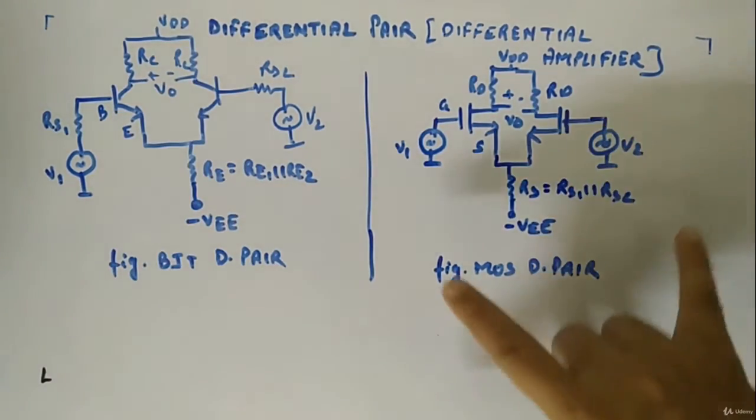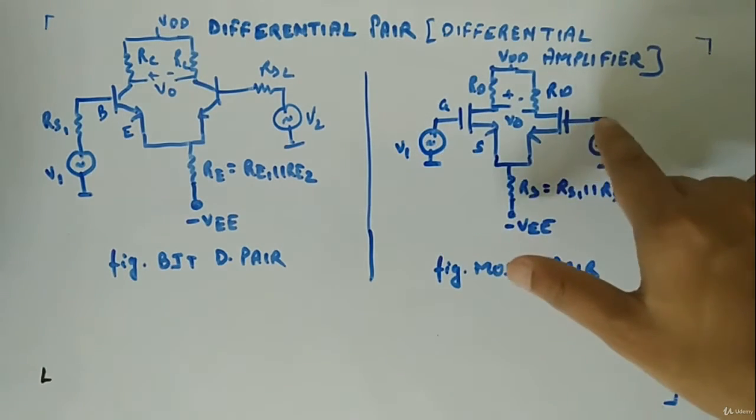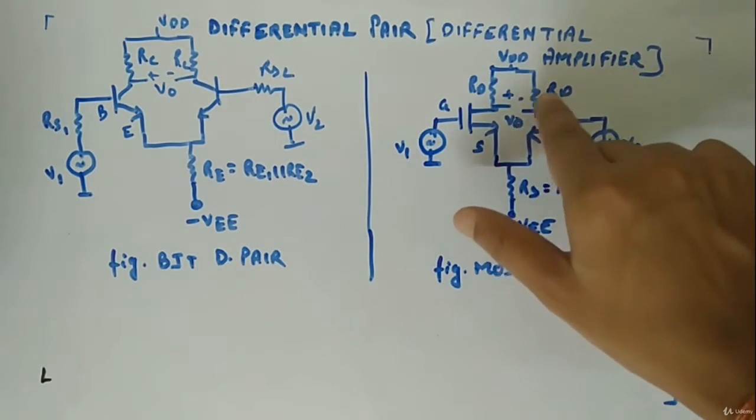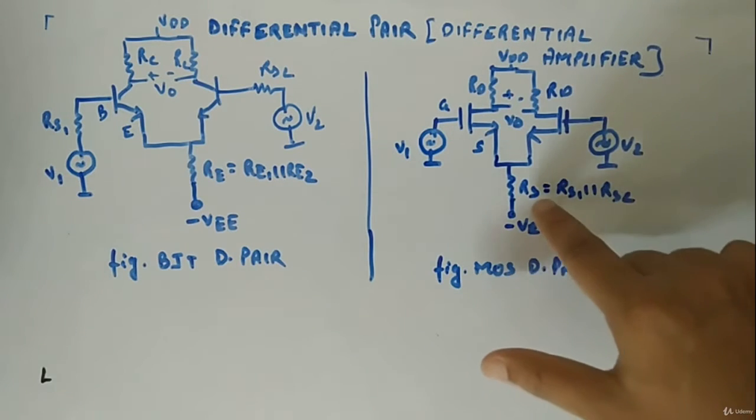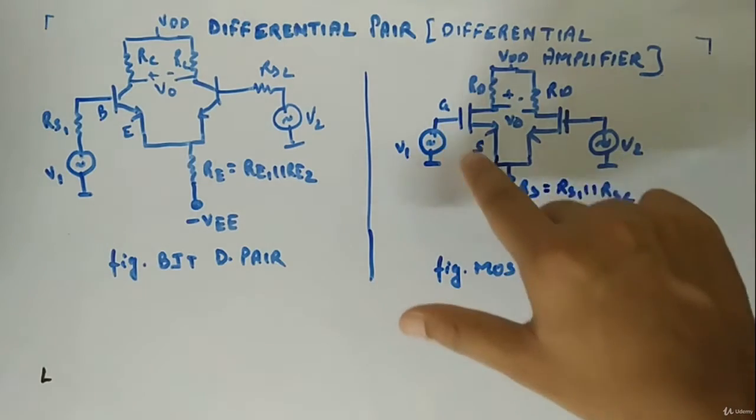Similarly here, V1 is there. I have not made source resistance because anyway current in gate is zero. RD, output is taken from RD. VDD is there, minus VEE is there. RS is RS1 parallel RS2.